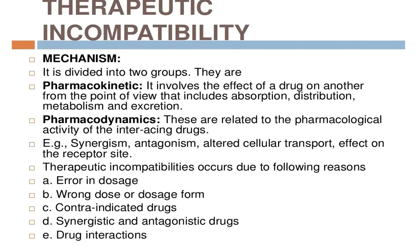The mechanism of therapeutic incompatibility is divided into two groups: pharmacokinetic and pharmacodynamic. Pharmacokinetics involves the effect of one drug on another from the point of view that includes absorption, distribution, metabolism and excretion. Pharmacodynamics are related to the pharmacological activity of the interacting drug.